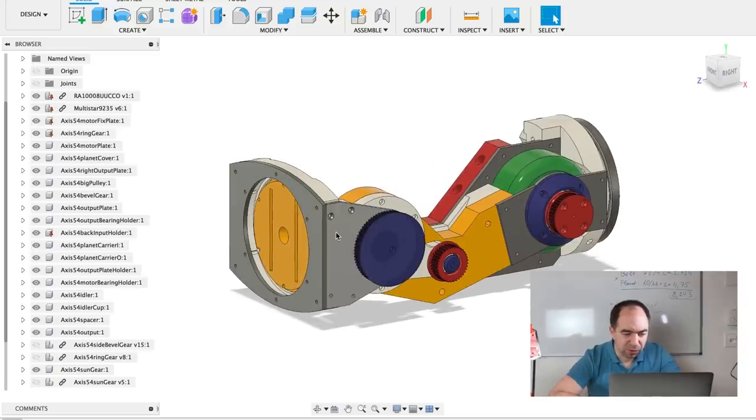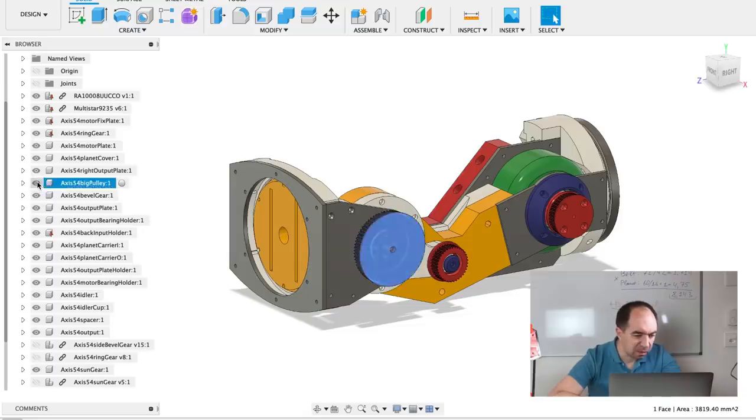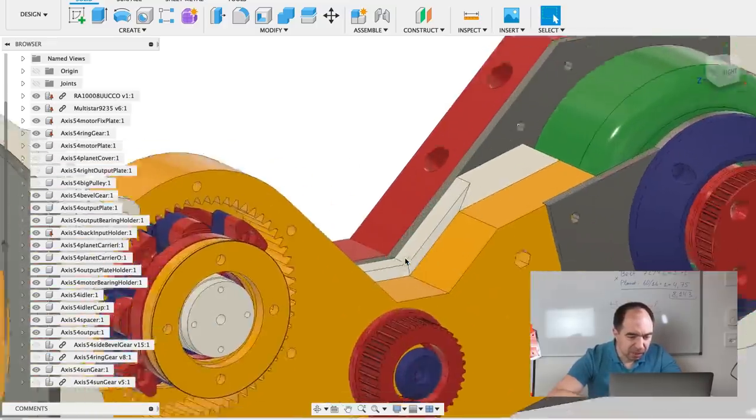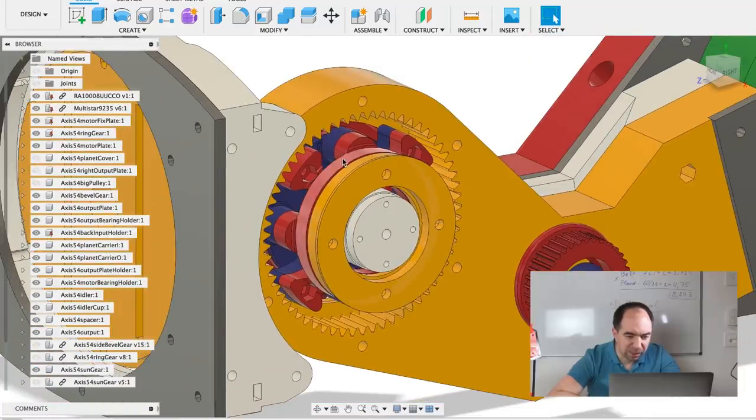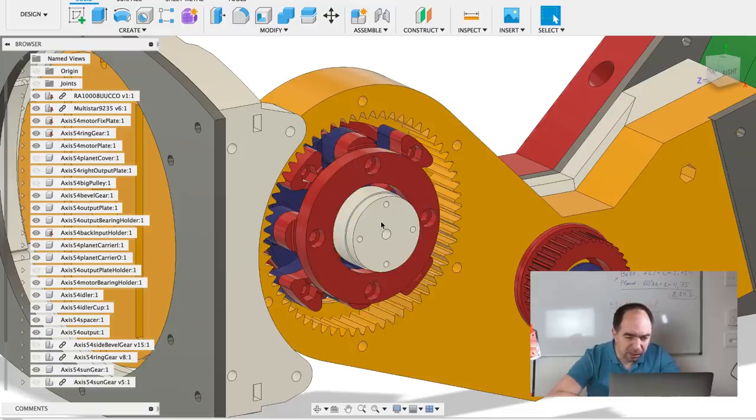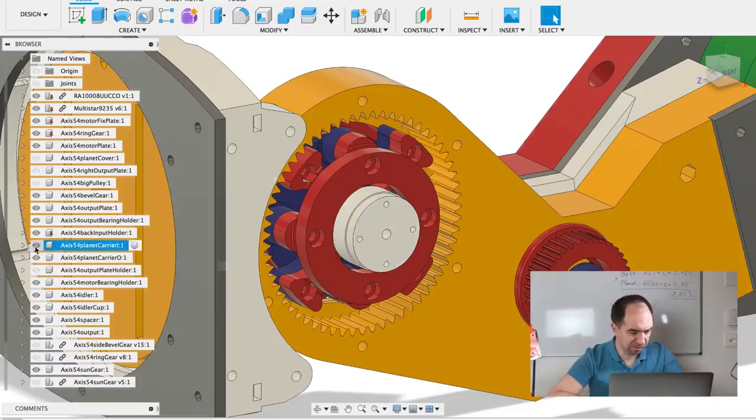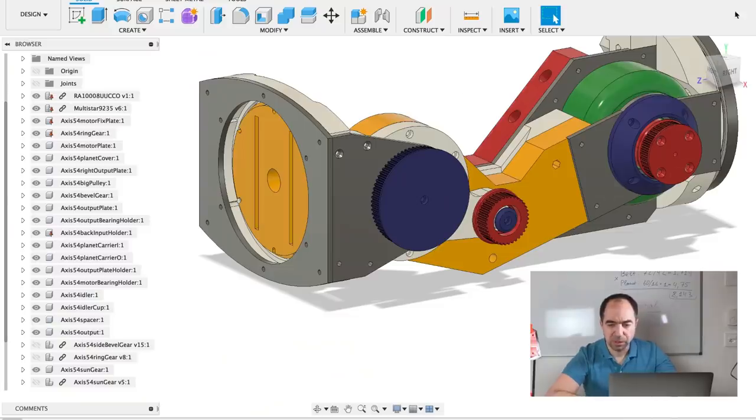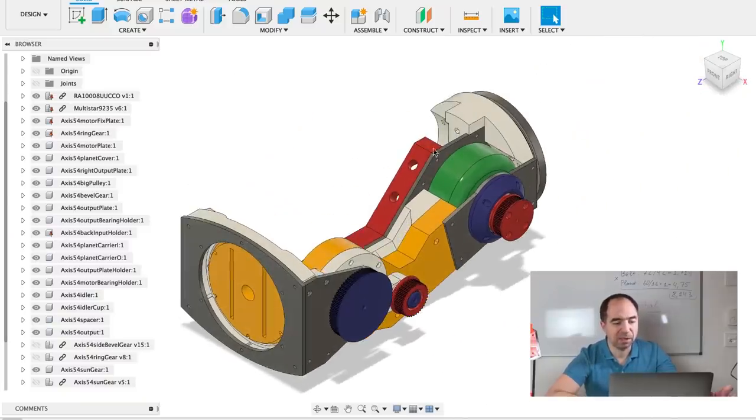I can also show you the planetary gearbox. So I need to hide this piece, this piece, and this one. And now you can see that this red piece is a planet carrier. The blue piece is also a planet carrier. This is the ring gear and this white piece is a sun gear. You see, sun gear. So the design is quite simple and it's also easy to build. That's why I like this design.